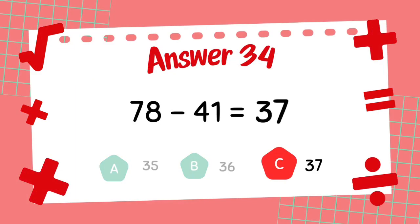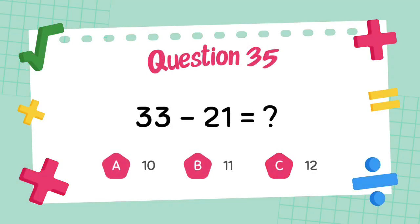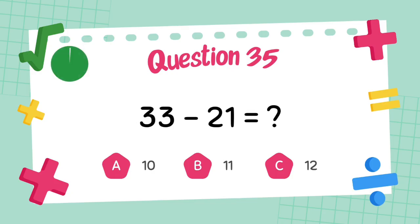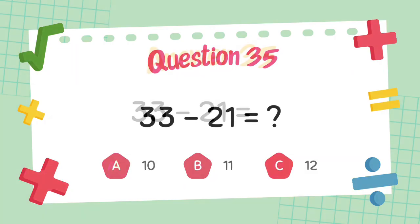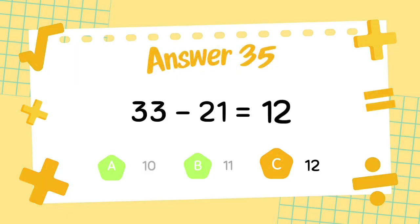What is 78 minus 41? The answer is 37. What is 33 minus 21? The answer is 12.